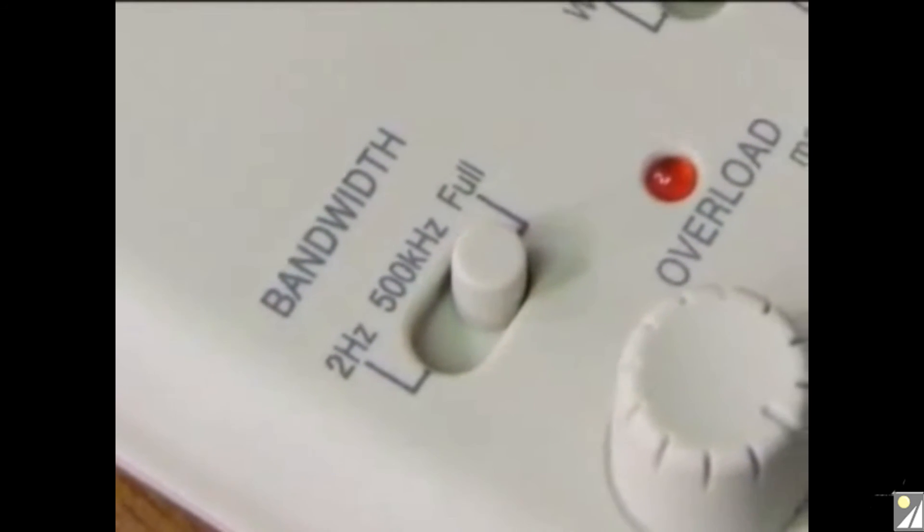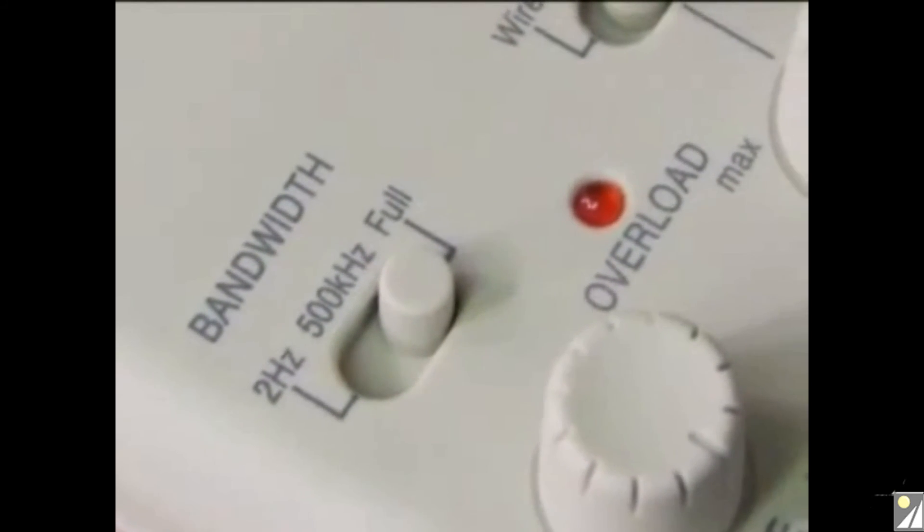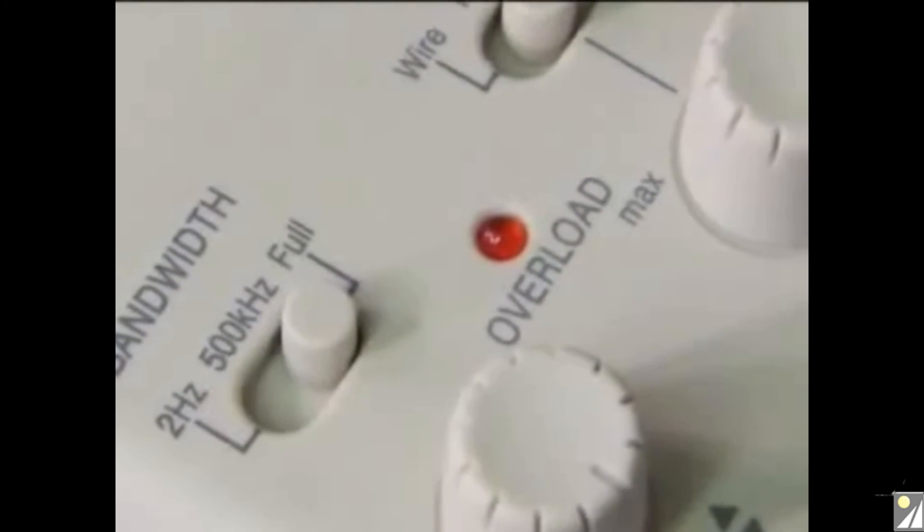In the center is the overload indicator, which lights when currents above 20 amps peak to peak are driving the sensor into overload.